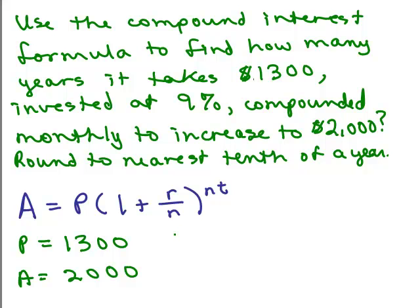What about the interest rate R? That's 9%, we want to write that as a decimal, so it's 0.09. We don't know the time, but N is how many times per year the interest is compounded. Since it says monthly and there's 12 months in a year, N is 12.